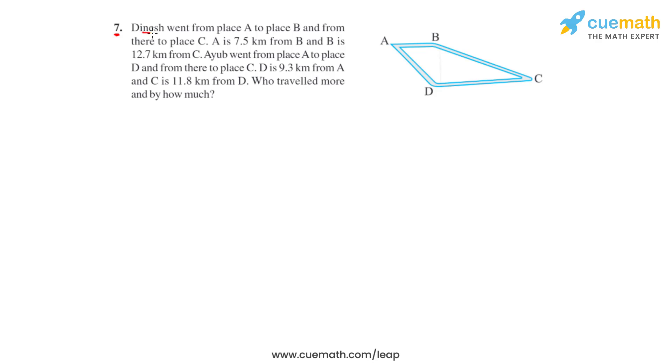Question number 7 says that Dinesh went from place A to place B and from there to place C. A is 7.5 kilometers from B and B is 12.7 kilometers from C. So here in the figure we can write the distance between A and B as 7.5 kilometers and the distance between point B and point C as 12.7 kilometers.